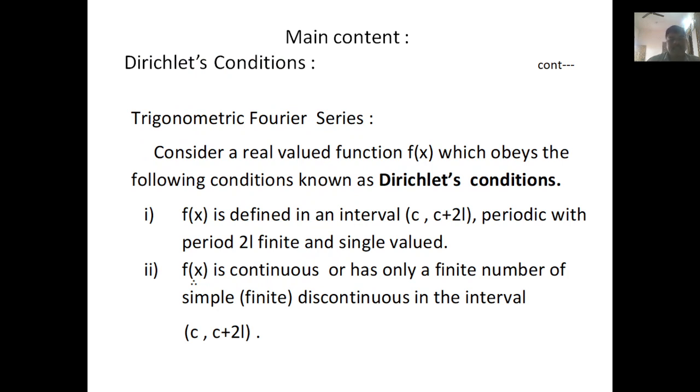Dirichlet's conditions for trigonometric Fourier series. Consider a real-valued function f(x) which obeys the following conditions known as Dirichlet's conditions. The first one is: f(x) is defined in an interval (c, c+2l), periodic with period 2l.